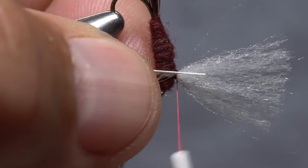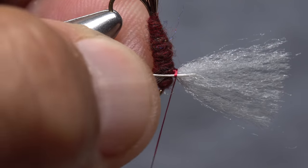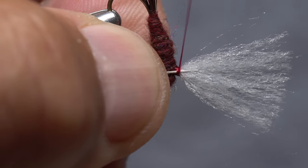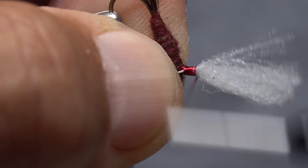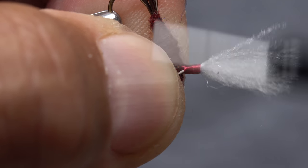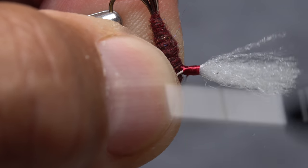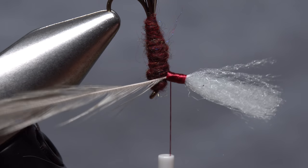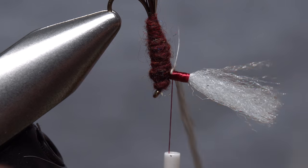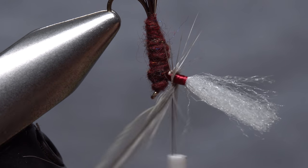Place that eighth of an inch against the post and start taking wraps to secure it. Generally, the added structure of the stem and the horizontal orientation of the post will make the whole process of posting much easier than normal. End with your thread at the base of the post, then get hold of the hackle and start making clockwise wraps with it up the post.